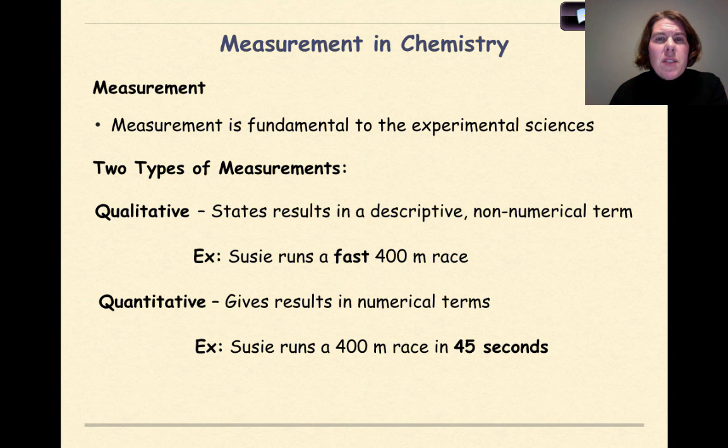So let's talk about some different examples of measurement in chemistry. The first thing that you need to know is that measurement is fundamental to the experimental sciences. We take a lot of measurements, different types of measurements in chemistry. There's two ways of breaking down these measurements.